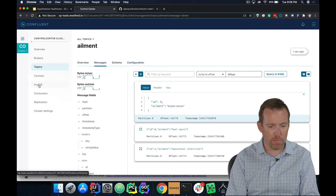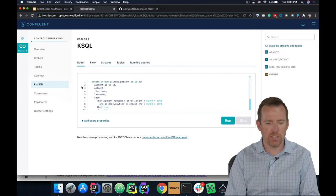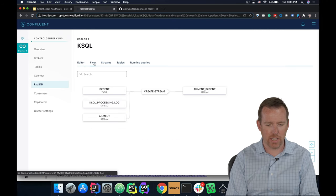And let's pop over to ksqlDB, and you'll see a topology. If we go to the flow view here, you'll see a topology. We have the patient table. This is a table.